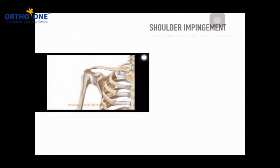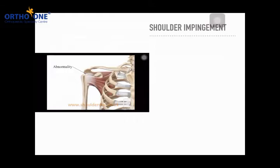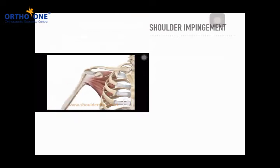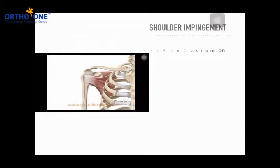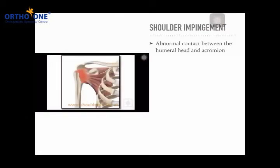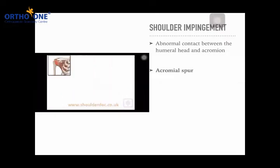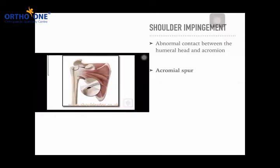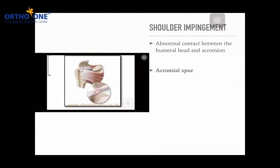Impingement is a condition where, when the shoulder bone moves, it hits against the acromion. Because of this, the patient develops a muscle tear that initially produces pain, followed by severe disability due to weakness from the muscle tear. It is an abnormal contact between the humeral head and the acromion, commonly associated with an acromion spur, which I will explain in detail.